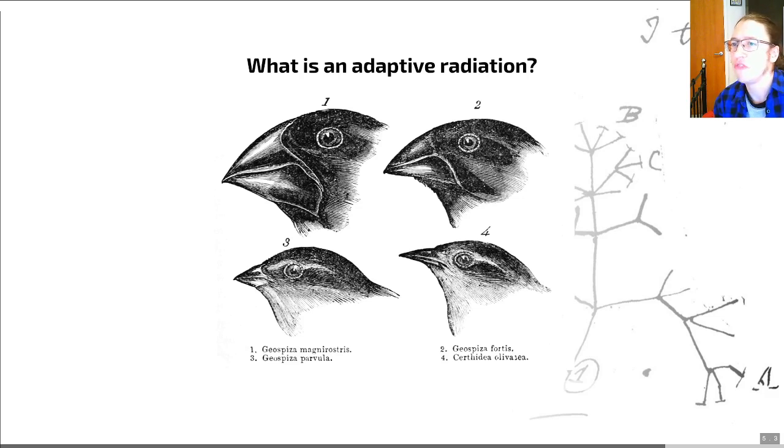But the reason that we focus on this, rather than other radiations within this video, is because adaptive radiations are thought to be responsible for much of the diversity on Earth. A really famous example that I wanted to start with, that we touched on when talking about niche partitioning as well, was Darwin's finches on the Galapagos Islands.